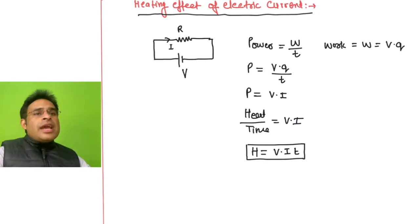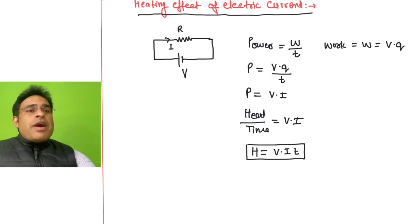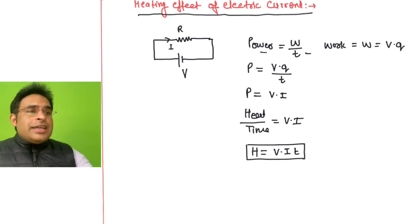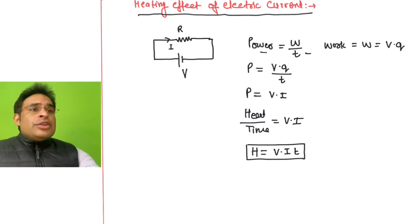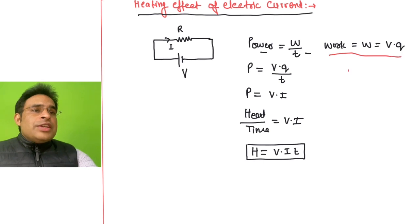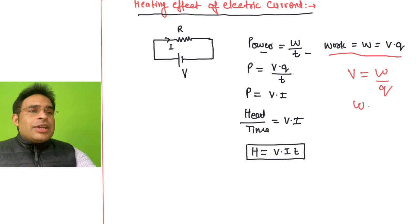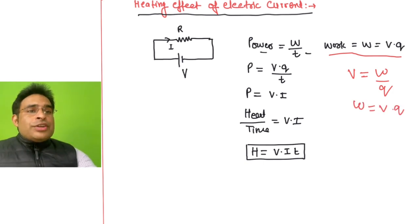Now we know power is equal to work done divided by time. P = W/t — this is the basic formula. And work is equal to V into Q. We know V = W/Q, so from that same formula we can write W = V into Q.